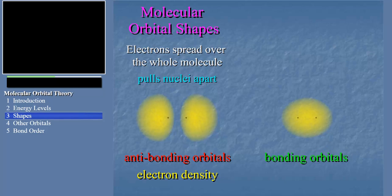If more electrons are in bonding-type orbitals than in anti-bonding type orbitals, then the net effect is that the nuclei are pulled together, and the molecule holds together. If there are more electrons in anti-bonding type orbitals than in bonding-type orbitals, then the molecule is pulled apart — in other words, it's not stable. Of course, for stable molecules, there are always more electrons in bonding-type orbitals than in anti-bonding orbitals, and the molecule holds together.